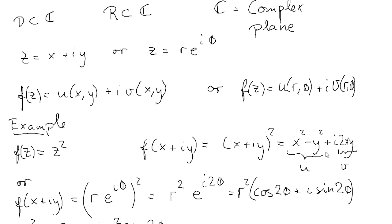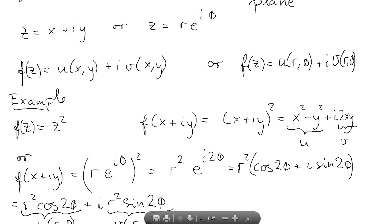This is the real part of our function value, and this is the imaginary part. We can also represent it in polar form. The z value can be represented in polar form. Then we obtain this expression, r times e to the power of iφ, and this is squared, so we get r squared multiplied with e to the power of i2φ.